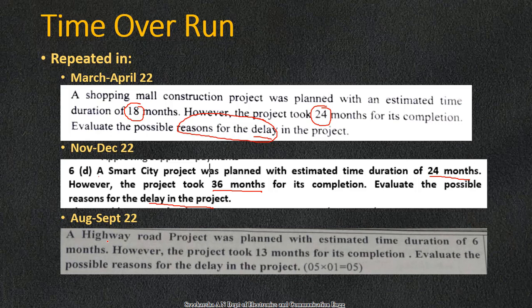In August/September 2022, the question is: 'A highway road project was planned with an estimated time duration of 6 months. However, the project took 13 months for its completion. Evaluate the possible reasons for the delay in the project.' This is how they ask about time overrun.